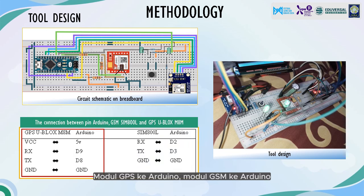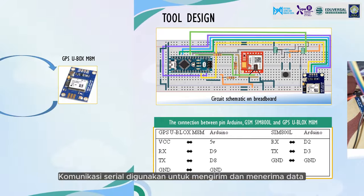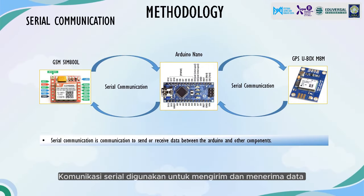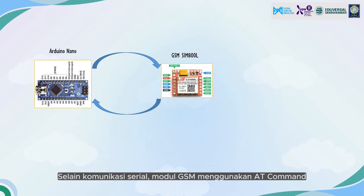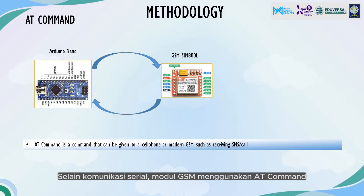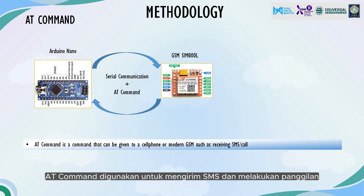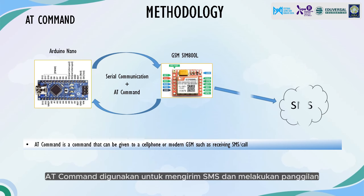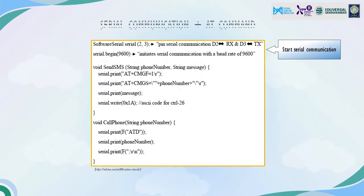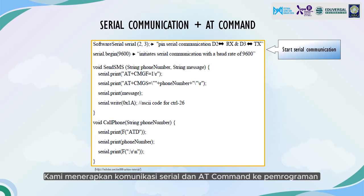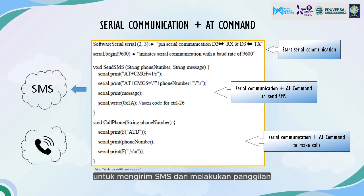The GPS module and GSM module are both connected to Arduino. Serial communication is used to send and receive data between Arduino and its components. In addition to serial communication, the GSM module uses AT commands to communicate with Arduino — AT commands are used to send SMS and make calls. We implement serial communication and AT commands in the programming to send SMS and make calls.